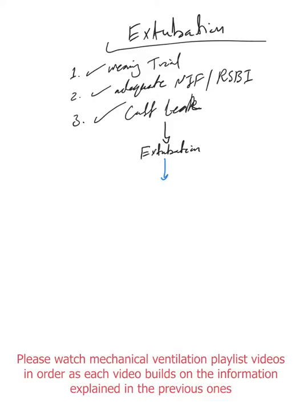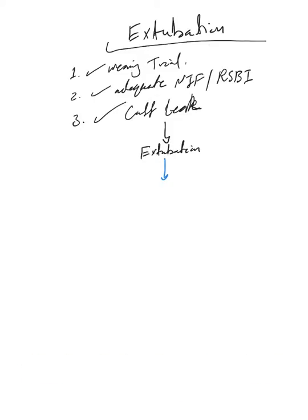Okay, finally the patient passed his weaning trial. He has adequate negative inspiratory force, RSBI, and positive cuff leak test. For details about these, please watch my previous videos on the weaning process. Now it's time to extubate. We tell RT we are ready to extubate. RT usually wants to know the next step from you.